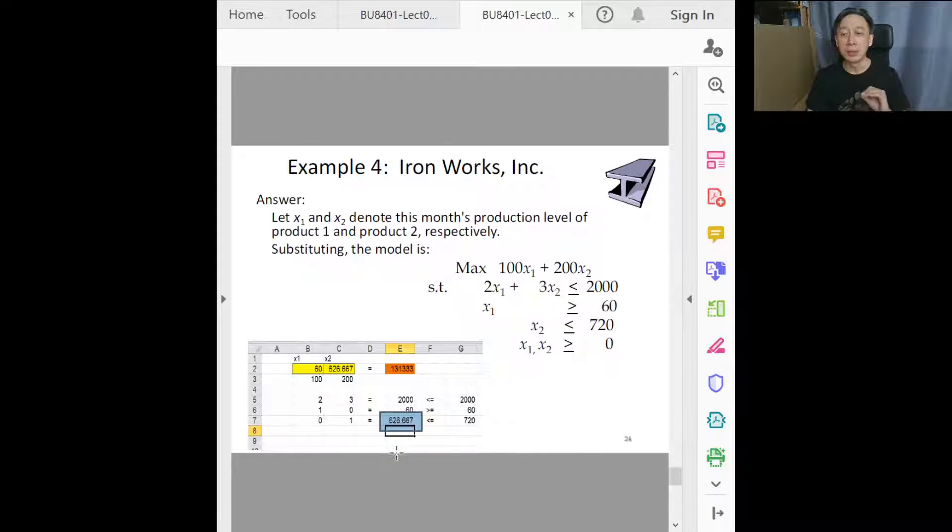For the third constraint, we cannot produce more than 720 units of x2, and what happened was we only produced 626.67 units. That's the output given by the system.